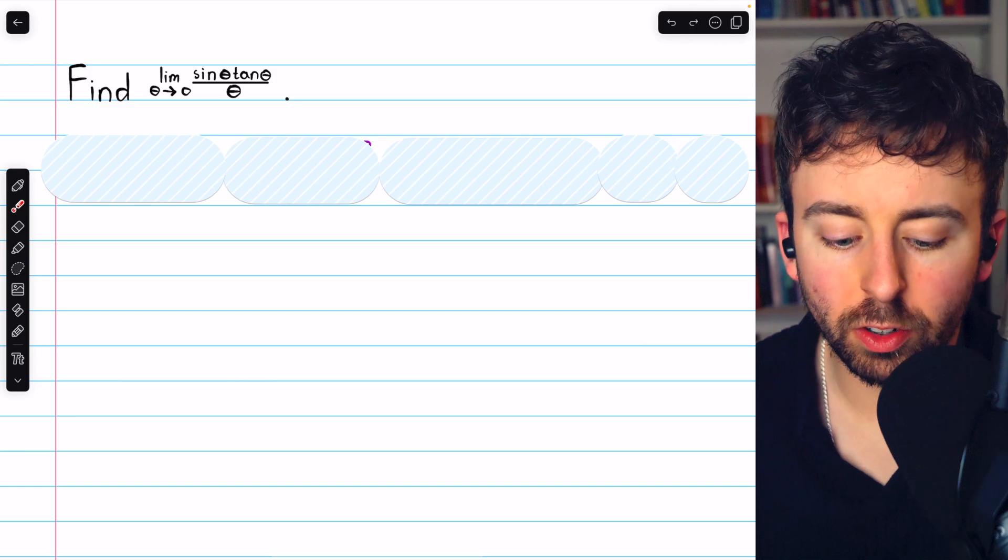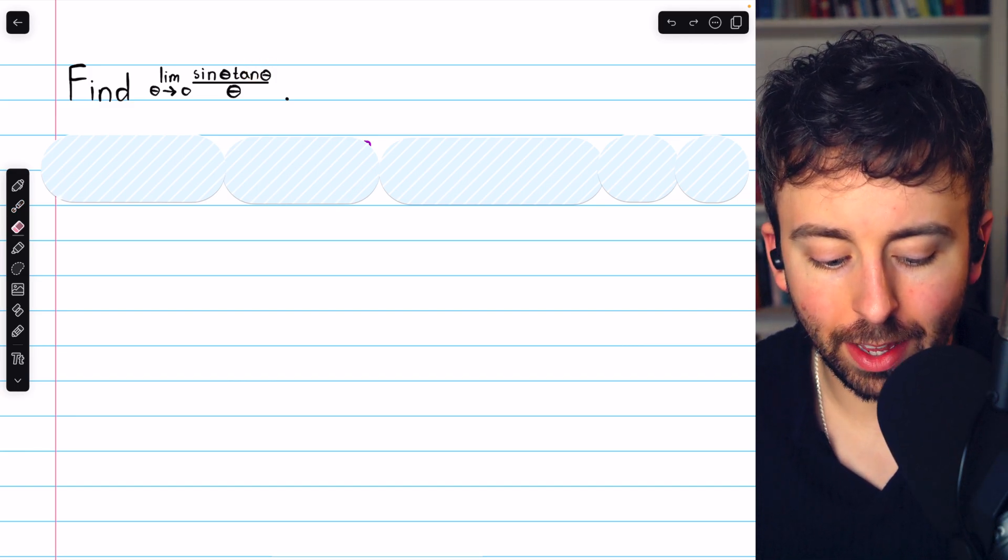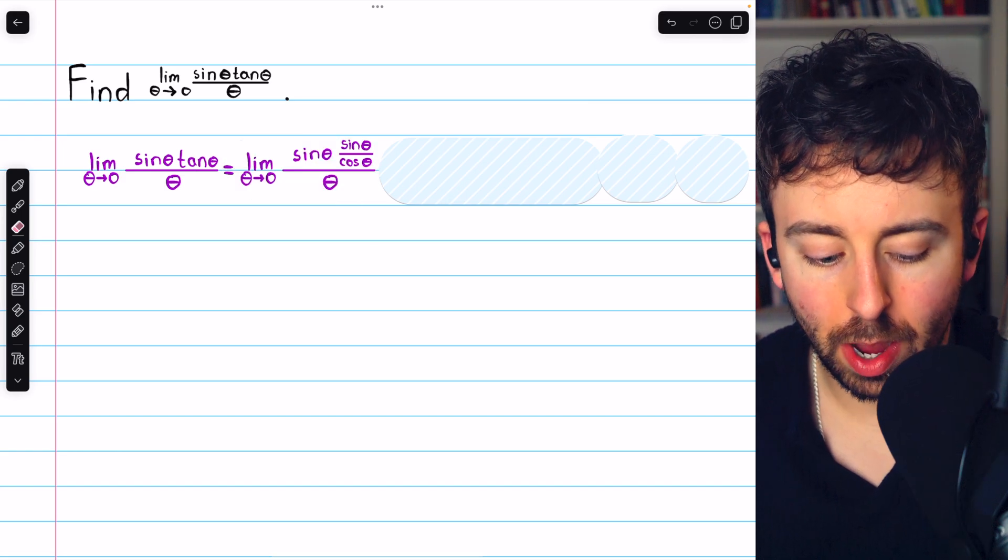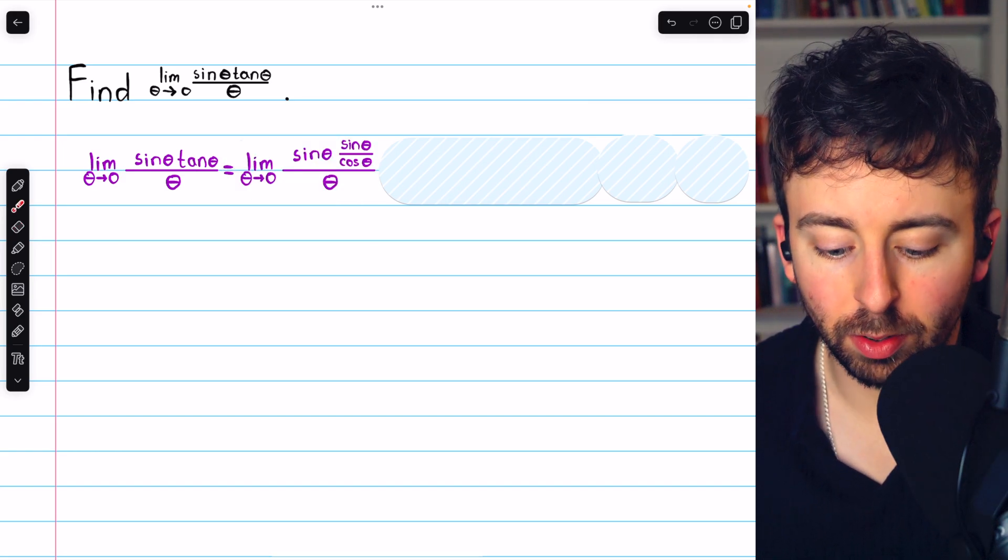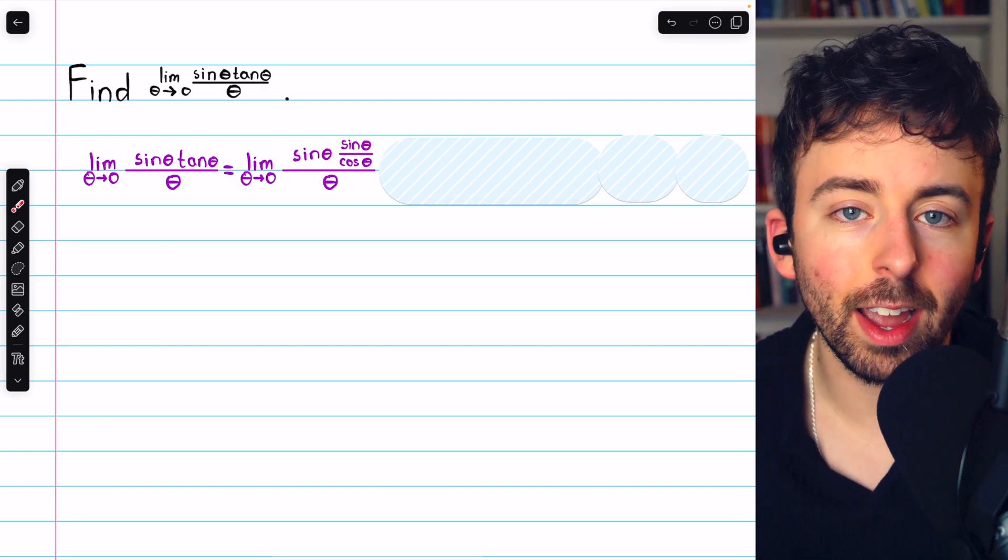You don't have to do this, but if your knowledge of tangent isn't great, it may be preferred to just write it as sine over cosine so you have some more familiar functions. So this would just be the same limit, but tangent replaced with sine over cosine.